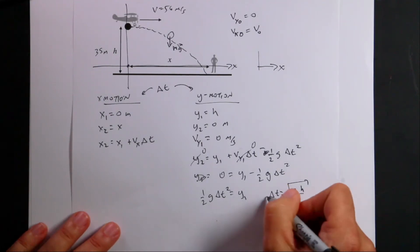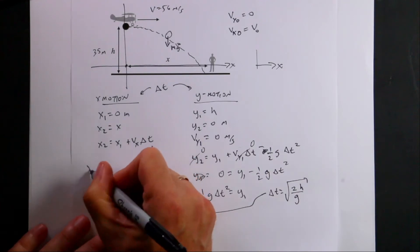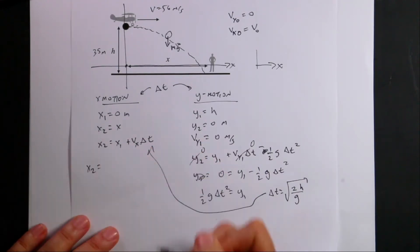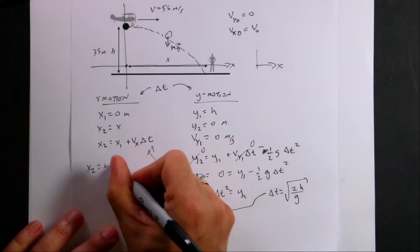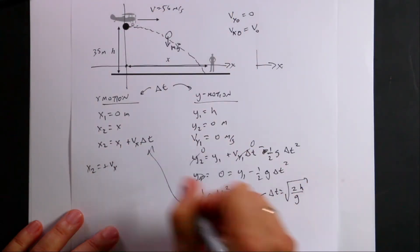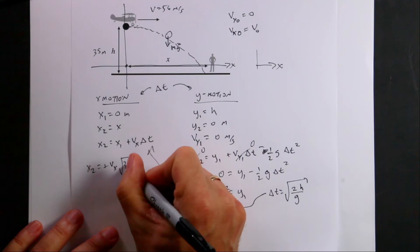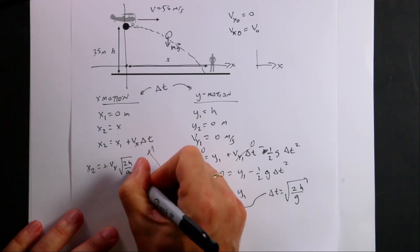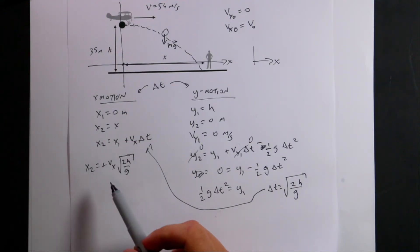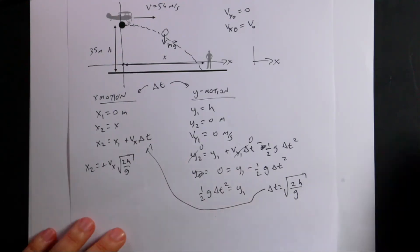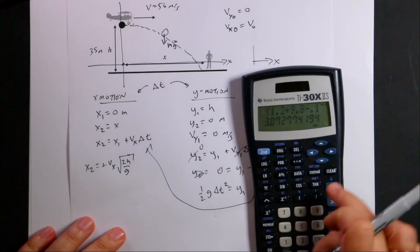But now I can take that and put it up here. So now I can say x2 equals x1, which is zero, plus vx, which is just that. I'll just call it vx. Times delta t, which is this. Square root of two h over g. So we're going to put in my numbers. I'm going to do that in Python because I don't. Well, okay. Here's my calculator. I'll do it because you asked nicely.